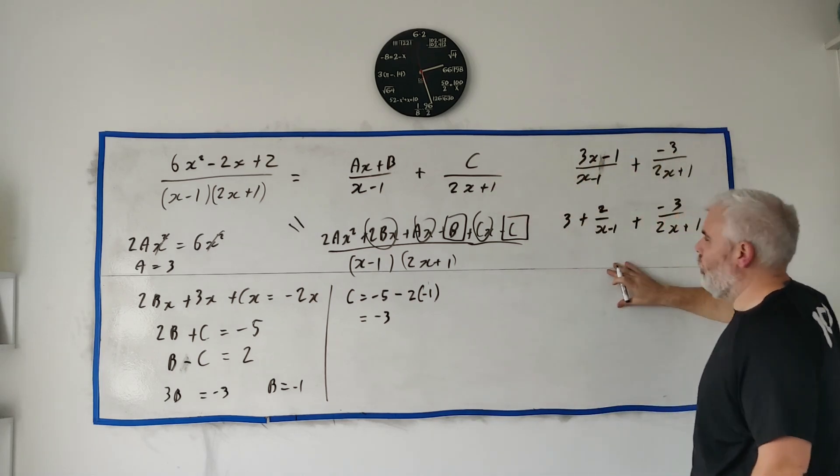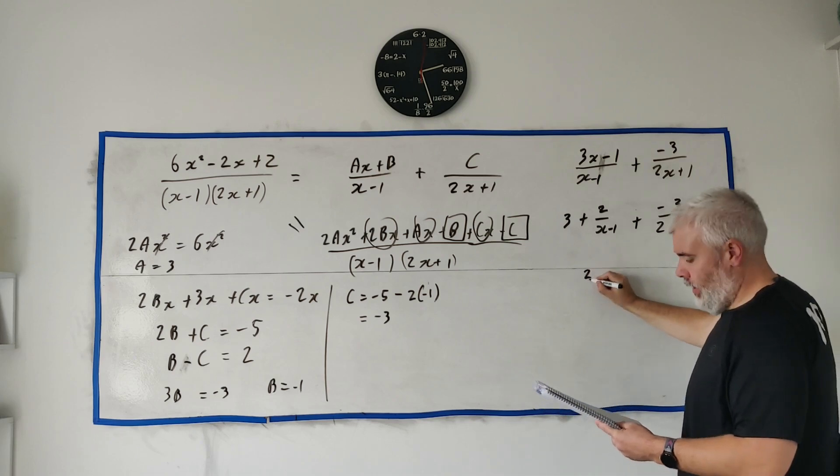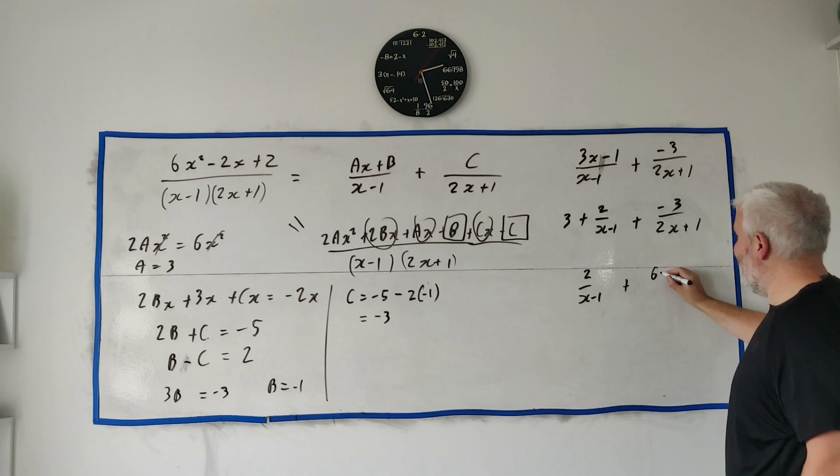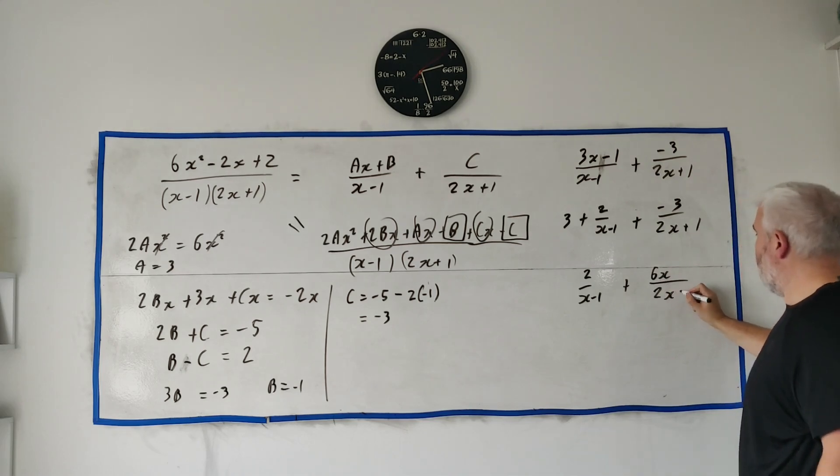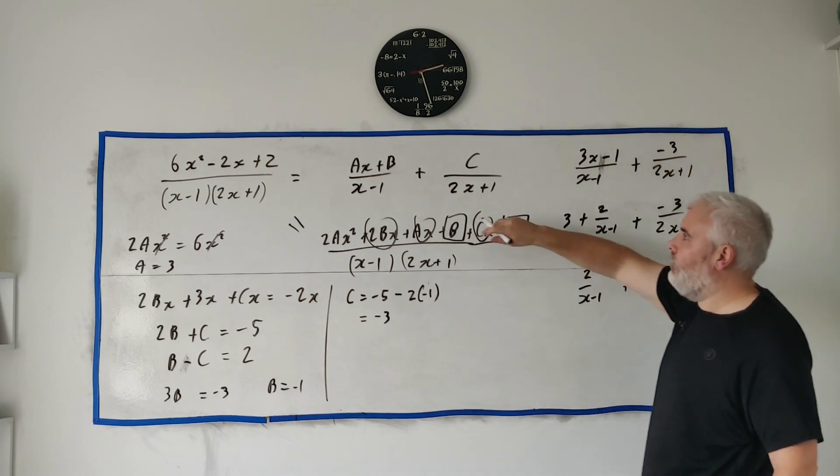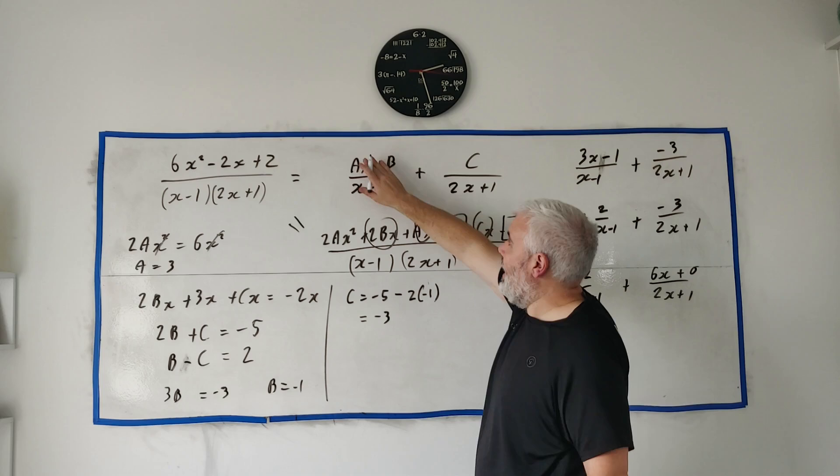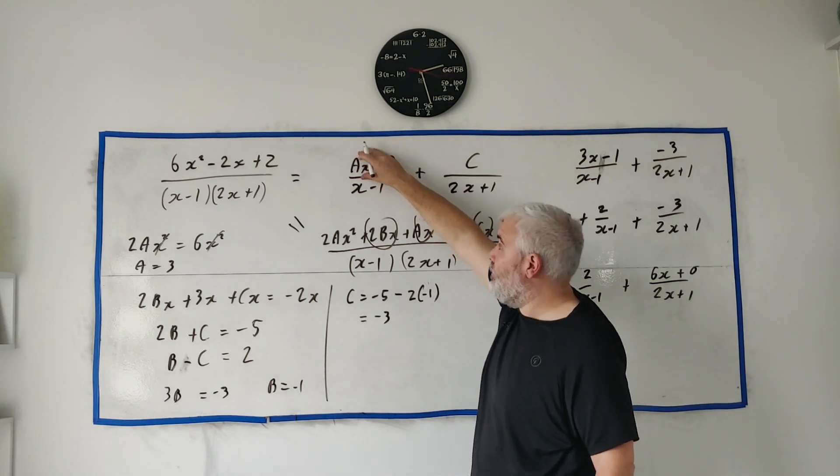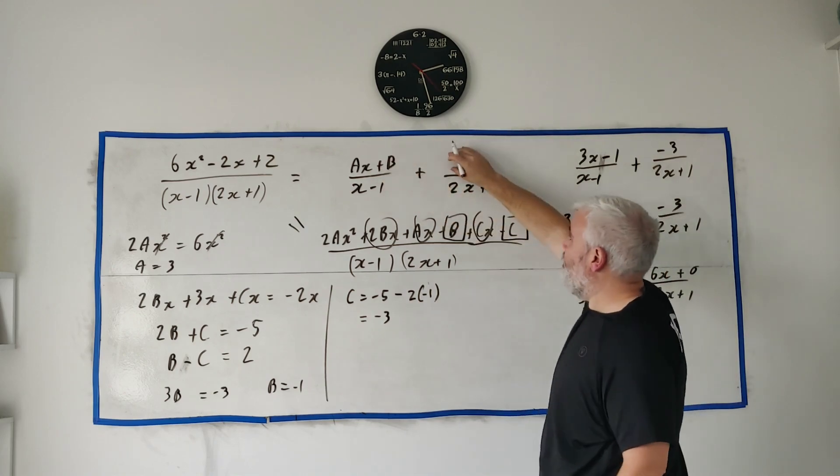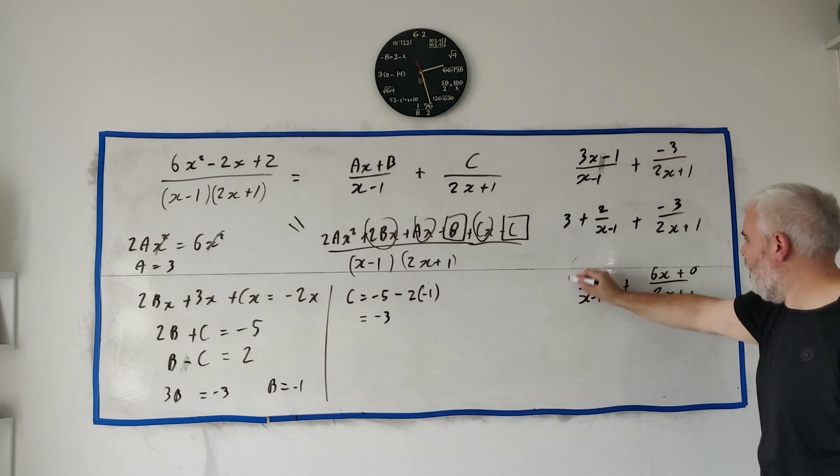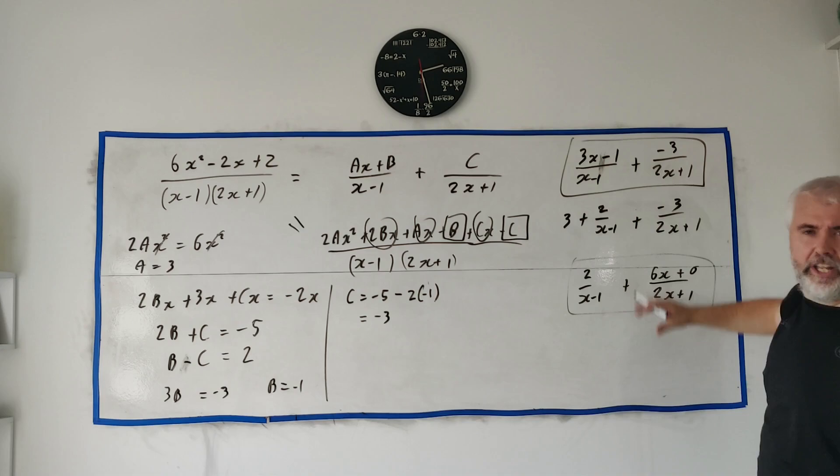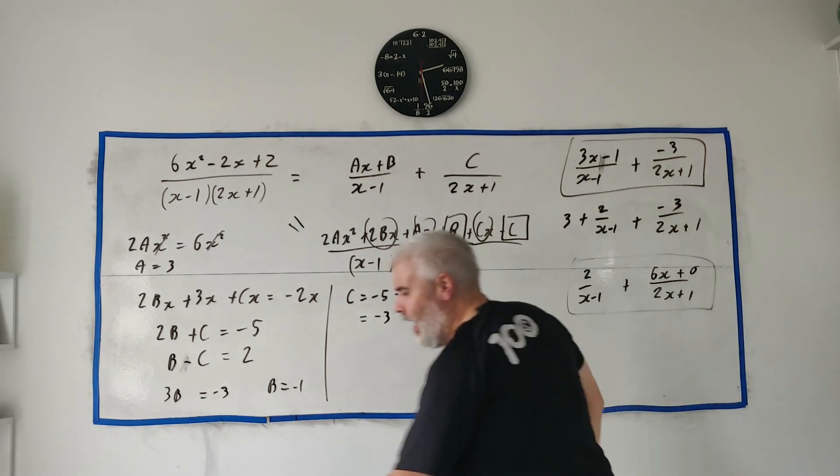This one I'll talk more about in a moment. This answer as we got this, the next answer, let me write it in here, 2 over x minus 1 plus 6x over 2x plus 1, or 6x maybe plus 0 if you want. So this one would have come about if I had wrote a letter here, a number just a constant here, and then the x on this side. So let's say a, bx plus c. I would have got this answer here.